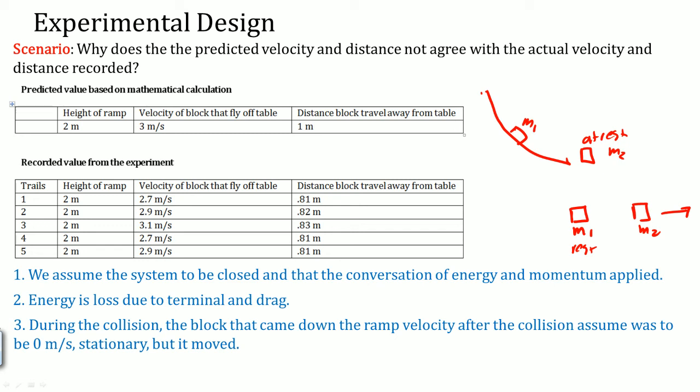So here you assume that during the collision, it collides perfectly so that the velocity got transferred. You can't do that. That's the reason why the velocity flying off the table was different every single time, because the collision between those two blocks were different each time. The distance traveled changes based on the velocity that came from the collision.